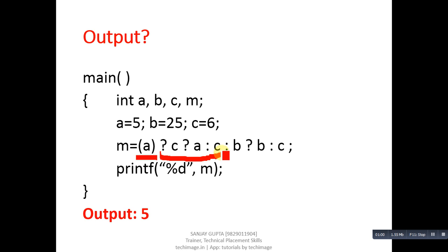So a is 5, means it is true. Inside this true block, again c will be treated as condition. Value of c is 6, it is again true. This question mark is the true part for c and this colon is the false part for c. So c is 6, it is true, so value of a will be assigned into m.